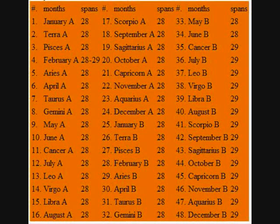Summer: Pisces B, 29 in Pegasus. Fall: April A, 20 in Cygnus. Winter: May A, 29 in Norma.